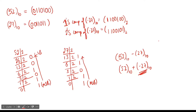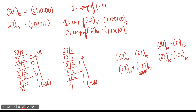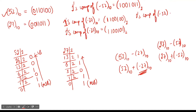Similarly for 27 minus 52, we write it as 27 plus (minus 52). For the 1's complement of minus 52, we take +52's binary and invert all bits including the sign bit. For the 2's complement of minus 52, we add 1 to the last bit of the 1's complement: 1 0 0 1 0 1 1 plus 1, carrying through, gives us our 2's complement of minus 52.